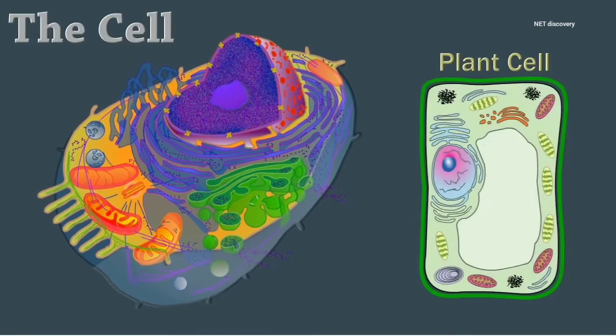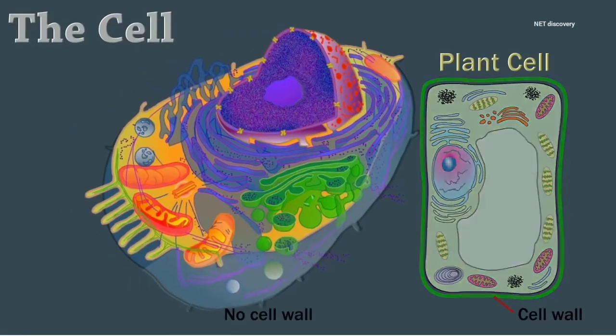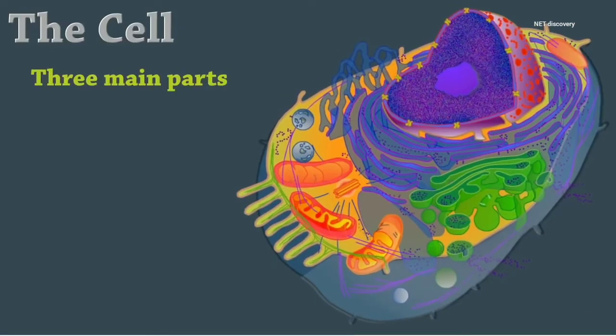Unlike plant cells, animal cells lack a cell wall, so they come in a variety of shapes and sizes. All animal cells have three main parts,